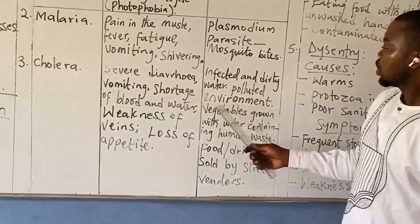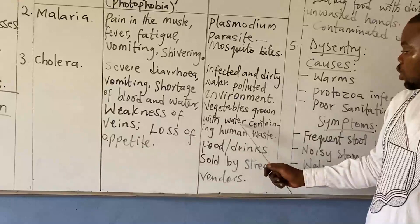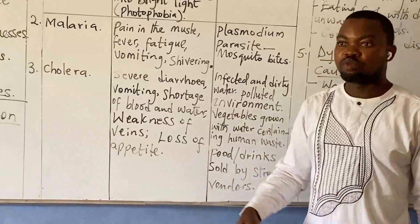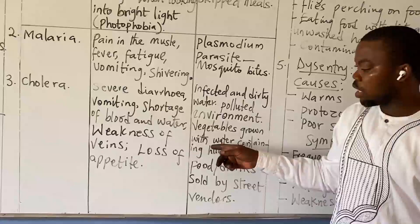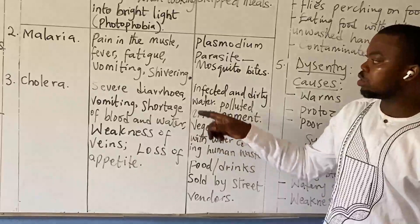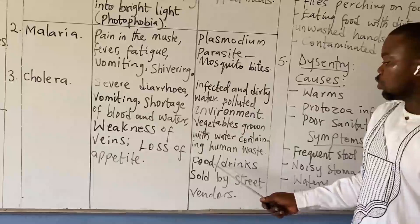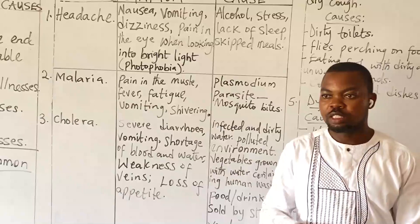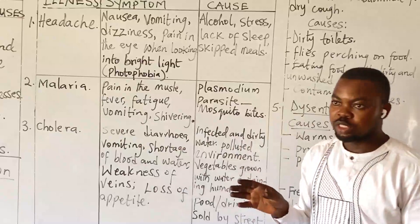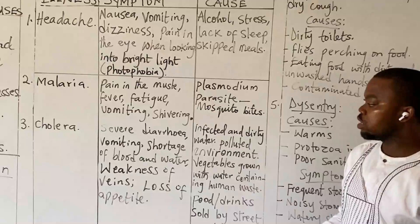We also have polluted environment — vegetables grown with water containing human waste. Sometimes people pass waste in rivers or streams; if you fetch that water and use it to irrigate a vegetable, and when we cook this vegetable, it can easily give us cholera. We also have food or drinks sold by street vendors — we don't know the source of this food or the water used in preparing it. The water may be infected and if we take it, it can easily give us cholera.